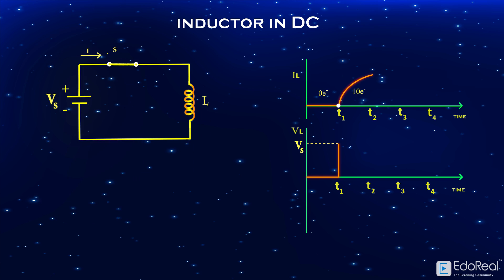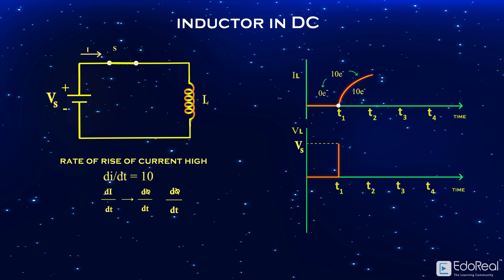This clearly indicates that the rate of rise of current is high. That is, the rate of change in current equals 10. A high change in current will cause high change in flux, because the rate of change in flux is proportional to rate of change in current.